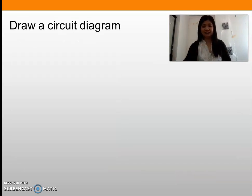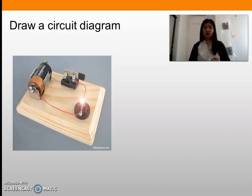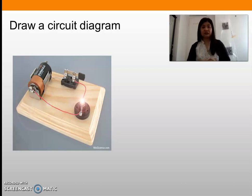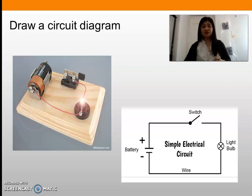Now, can you draw a circuit diagram? Let's try: this is the actual parts of an electric circuit, and you draw it using symbols because we are drawing a circuit diagram. If you draw it like this, that is correct — this is how to draw the circuit diagram. According to the electric circuit in the picture, we have one battery, one switch, one bulb, and the wire that connects all the components.